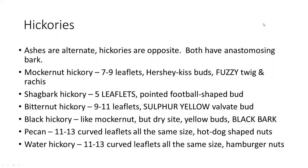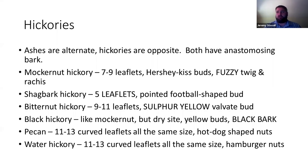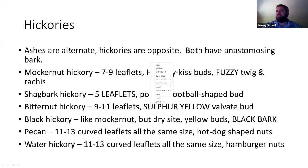Hickories give folks a lot of trouble online. People will confuse ashes and hickories. Remember that ashes are opposite and hickories are alternate. They give people trouble because they both have anastomosing bark forming diamond shapes, and they both have pinnately compound leaves. Ashes will generally have entire leaf margins with no serrations, whereas hickories are going to have serrated leaf margins. And of course, if you've got a nut, it's a hickory.